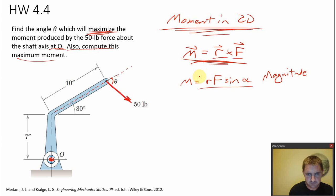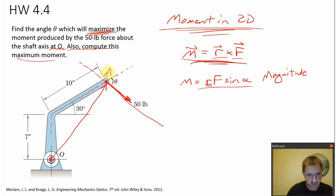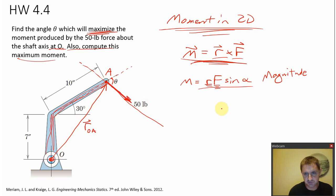R can go from the point you're taking the moment about to anywhere along the line of action of the force. A convenient place is the point where the force is applied — I'll call that point A. So this would be the position vector O to A. That length from O to A is fixed because this bar is a rigid bar. The magnitude of R_OA does not change; it's constant.